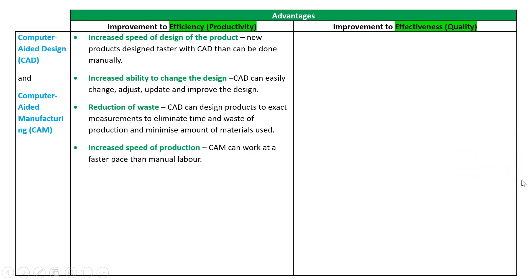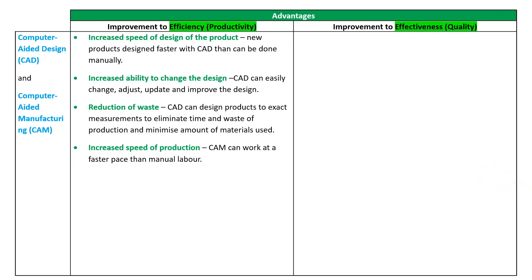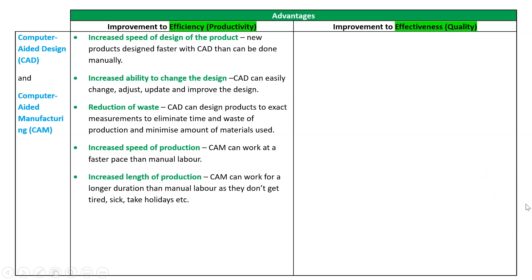We've also got increased speed. Now we get to the computer-aided manufacturing part — a lot of this involves automation. We can work at a faster pace than manual labor, and we also increase our length of production. Machines don't get sick, they don't take holidays, they're not tired, they don't have bad days — they just work at a set pace and can work 24 hours a day. And probably the biggest one: the greatest efficiency we'll get is lowered labor costs. We get much fewer human workers involved, so that lowers our wages bill.